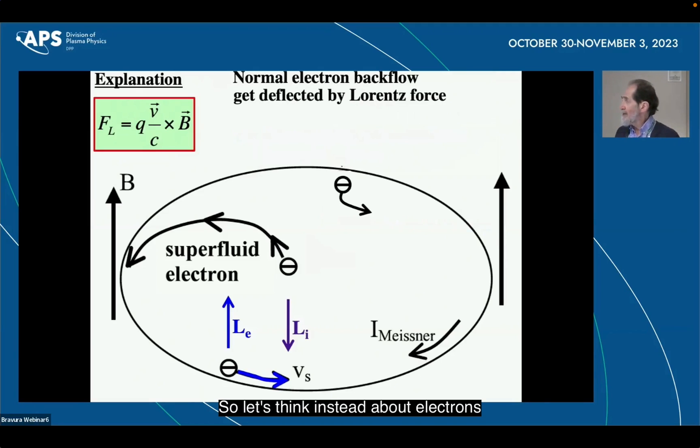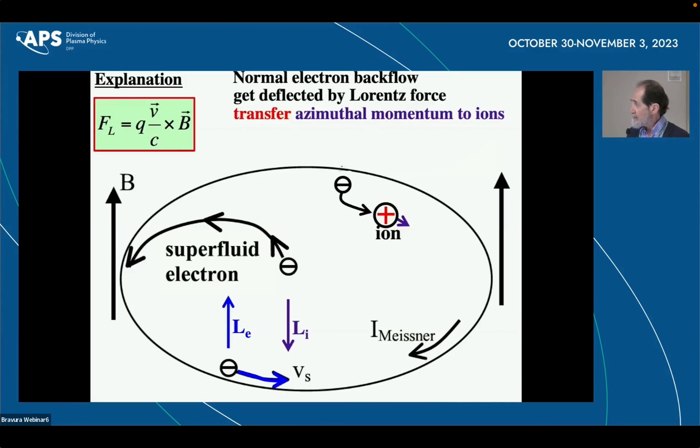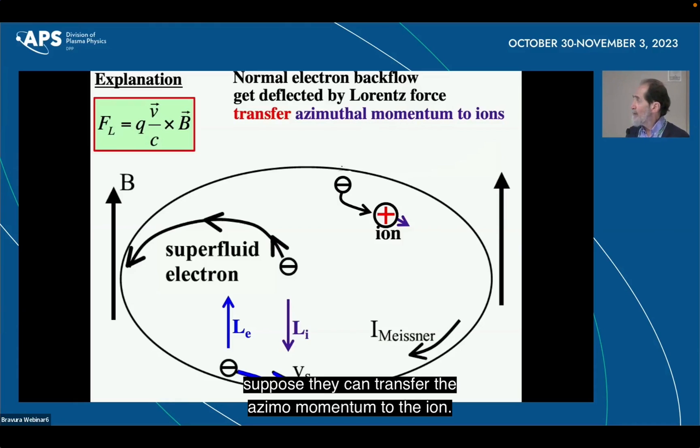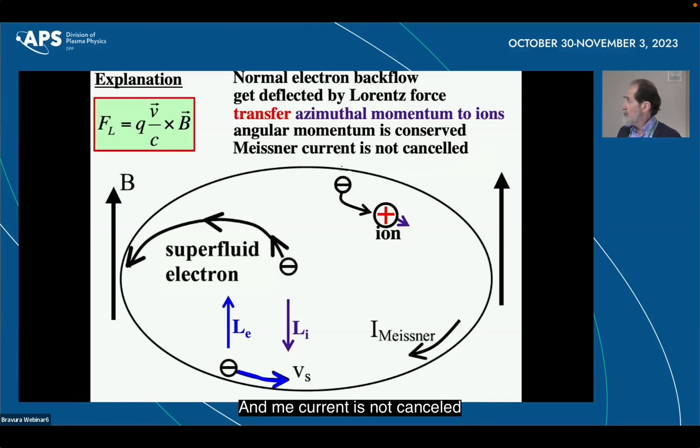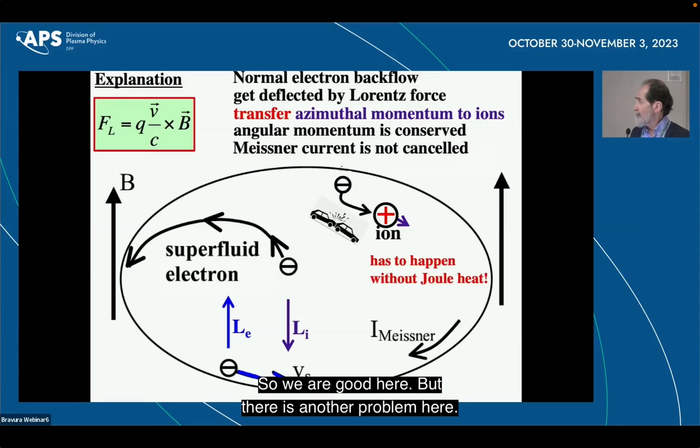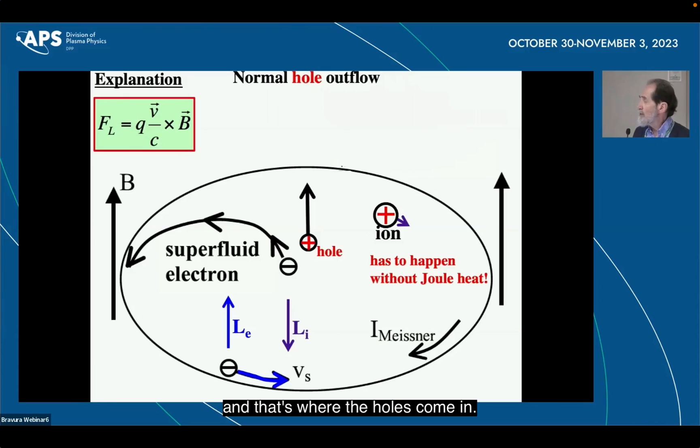So let's think instead about electrons that are back flowing, normal electrons that are back flowing. They will be deflected by the Lorentz force this way. Suppose they can transfer the azimuthal momentum to the ions. So the body as a whole starts moving. It compensates the angular momentum. And Meissner current is not cancelled because this is moving very slowly in this direction, the ions. So we are good here. But there is another problem here. This has to happen without any dissipation of joule heat. If the electron hits the ion and it dissipates energy, that's bad because the process is reversible.